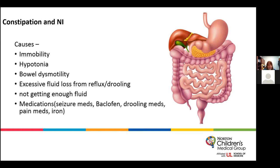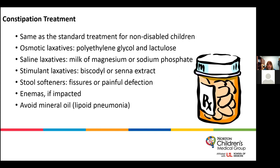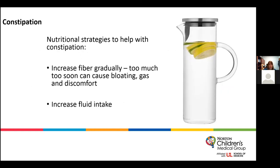Constipation in neurological impairment has multiple causes: excessive fluid loss, inadequate fluid intake, or medication side effects such as baclofen. Treatment is the same as for unaffected children — laxatives like polyethylene glycol or Miralax, or enemas if needed — while avoiding mineral oil if there is a risk of aspiration. Nutritional strategies include gradually increasing fiber to avoid gas or bloating, and adding extra water.